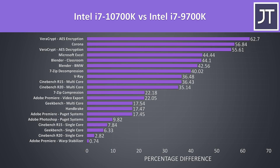Here's how the Intel i7-10700K stacks up against the older i7-9700K in these tests at stock. In every case the 10700K is ahead, which makes sense — it's better in every way. Though we can see there's far less improvement to single core heavy workloads, which litter the bottom of the graph, while multi-core workloads see far bigger gains due to the addition of hyperthreading.